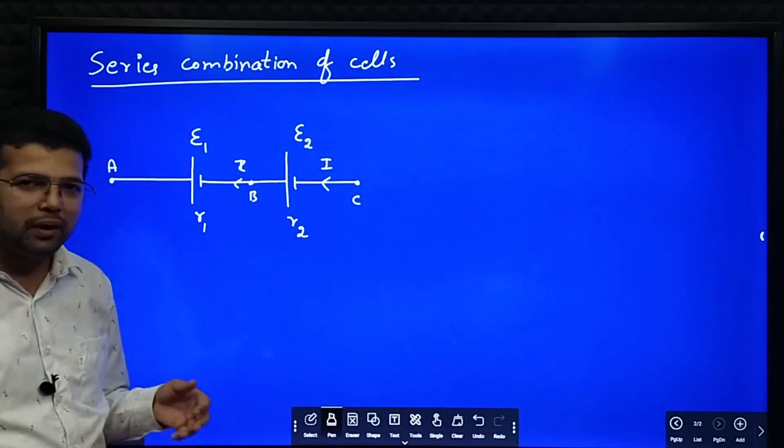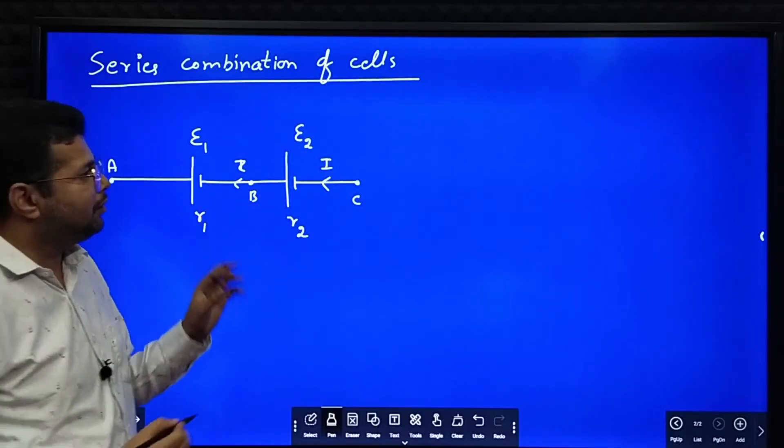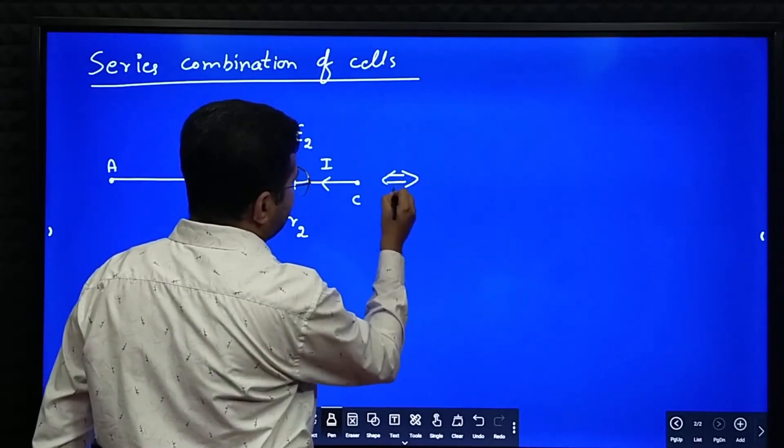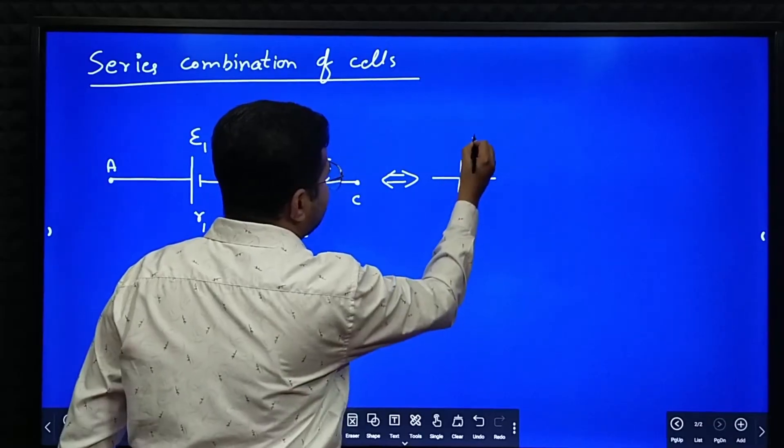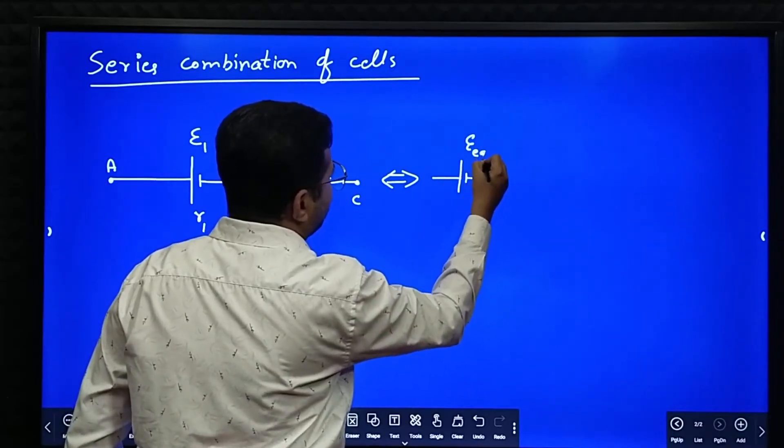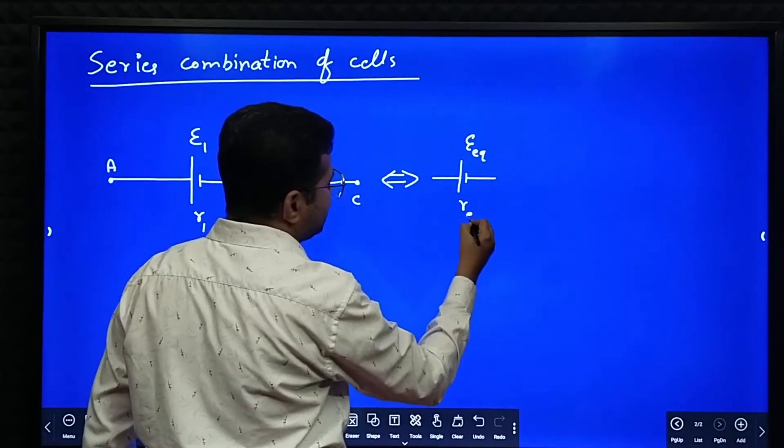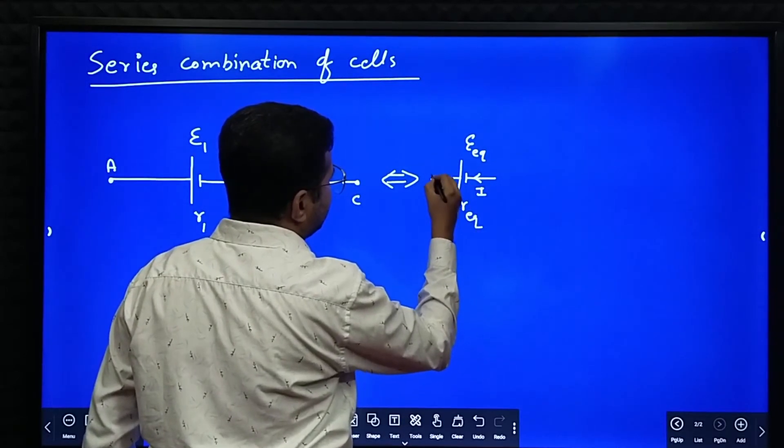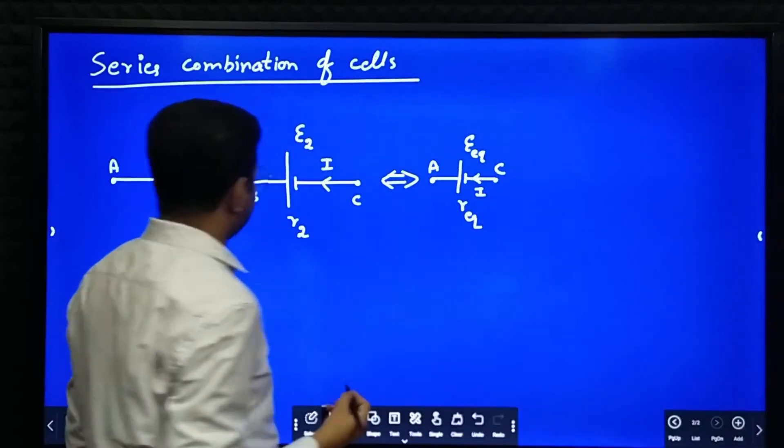Now what is our purpose? We want to replace this combination of cells into a single cell. The equivalent circuit will look like this. We are going to replace these two cells by a single cell of EMF E equivalent and internal resistance R equivalent. Current should be same I, this point is A, this point is C.